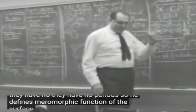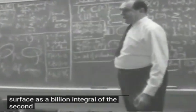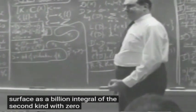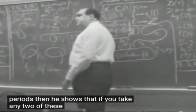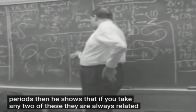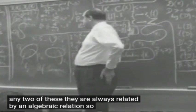Then he shows that if you take any two of these, they are always related by an algebraic relation. So he gets back to the original point of view after having gone very far from it.